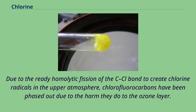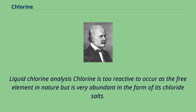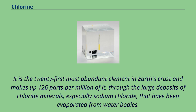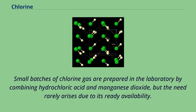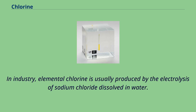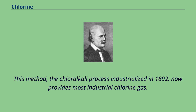Chlorine is too reactive to occur as the free element in nature but is very abundant in the form of its chloride salts. It is the 21st most abundant element in Earth's crust and makes up 126 parts per million of it, through large deposits of chloride minerals, especially sodium chloride, that have been evaporated from water bodies. All of these pale in comparison to the reserves of chloride ions in seawater; smaller amounts at higher concentrations occur in some inland seas and underground brine wells, such as the Great Salt Lake in Utah and the Dead Sea in Israel. In industry, elemental chlorine is usually produced by the electrolysis of sodium chloride dissolved in water — the chloralkali process industrialized in 1892 — which produces most industrial chlorine gas, along with hydrogen gas and sodium hydroxide.